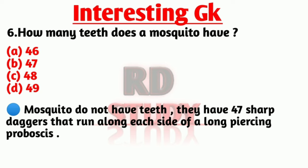Our next question is: how many teeth does a mosquito have? The right answer is option B, 47. Mosquitoes do not have any teeth. They have 47 sharp serrated edges that run along each side of a long piercing probe.